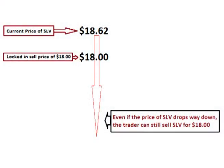This means that at any time between when the option is purchased and when the option contract expires, the trader has the option of selling his 100 shares of SLV for $18, no matter what the price of SLV is at that time. Even if the price of SLV drops to $6 per share, the trader can still sell it for $18 per share anytime he wants up until the time the option contract expires. When used this way, a put option acts like an insurance policy against loss.